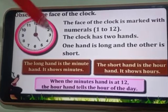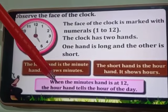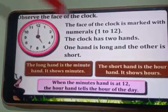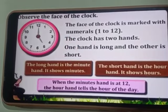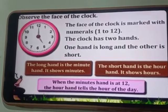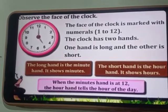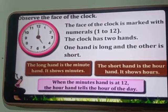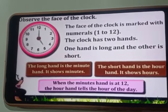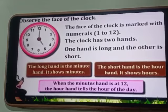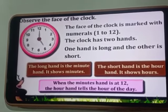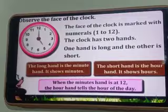So children, when the minute hand starts from 12, in one hour the minute hand goes round the dial once, and the hour hand moves one number to the next number. Thus, the hour hand moves round the dial once in every 12 hours.